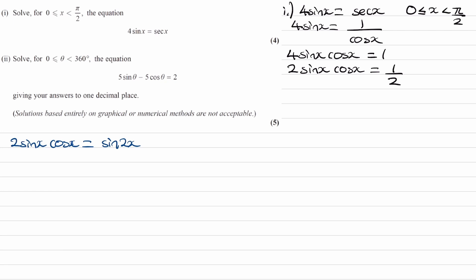The left hand side becomes sine 2x equals 1 half. Now we can solve this equation. We need to change the domain as well, because we have 2x inside the sine function — we have to multiply our domain by 2 to get x to become 2x.